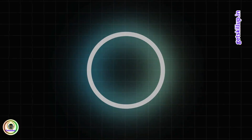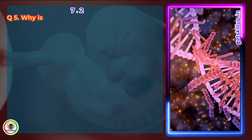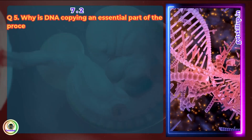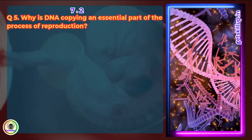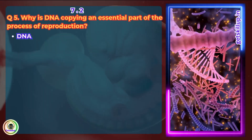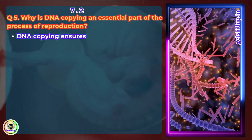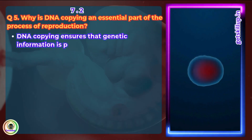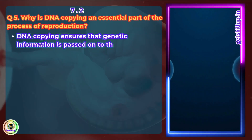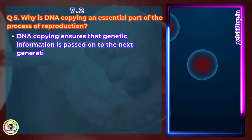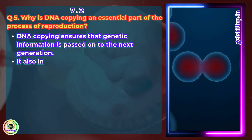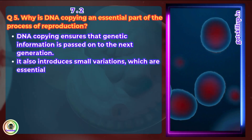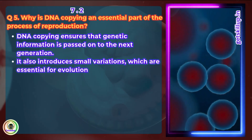Question 5: Why is DNA copying an essential part of the process of reproduction? DNA copying ensures that genetic information is passed on to the next generation. It also introduces small variations which are essential for evolution and adaptation.